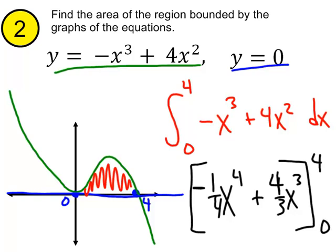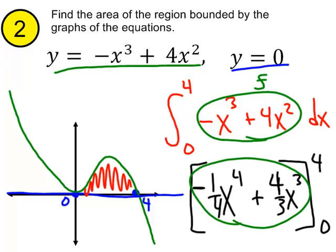And as I mentioned in the last exercise, if you're thinking of the FTC formula, this would be your little f. And this is your big F. And we're going to plug B and A into big F and subtract.